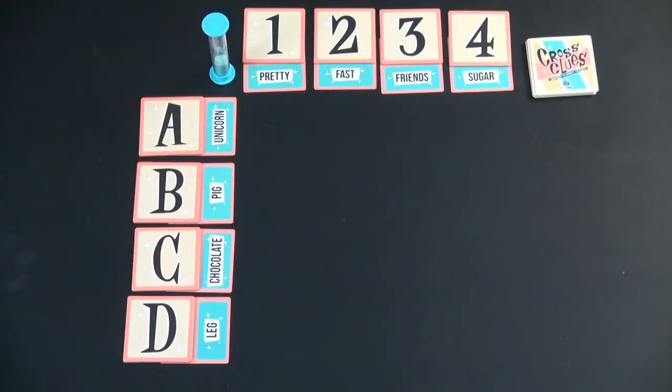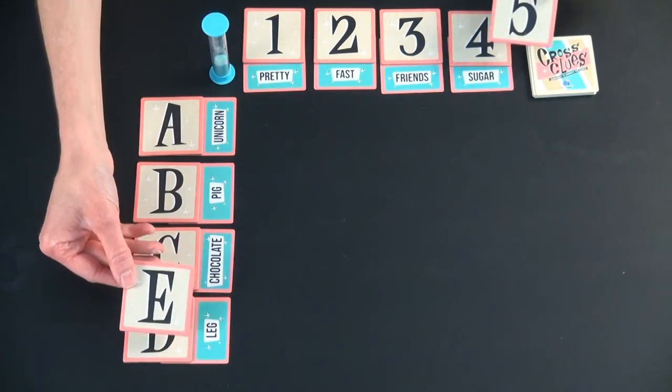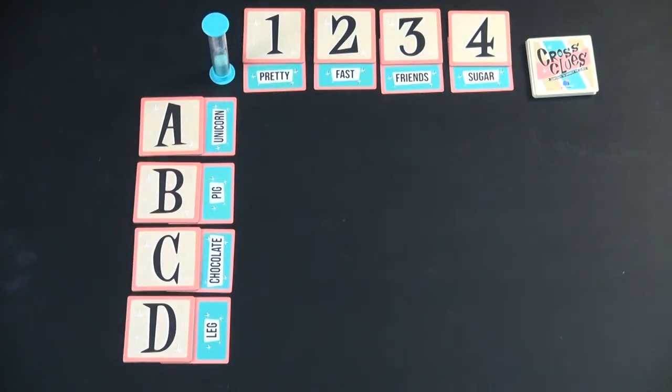Or if you want to go for it, you can do an expert level game and have it be a five by five grid, and then you add in the corresponding coordinate cards.